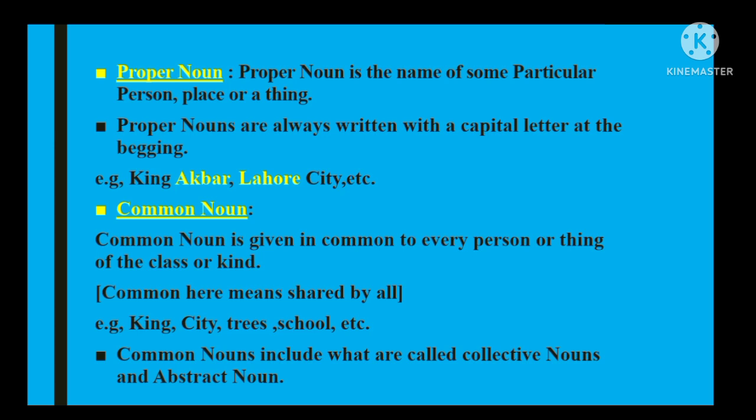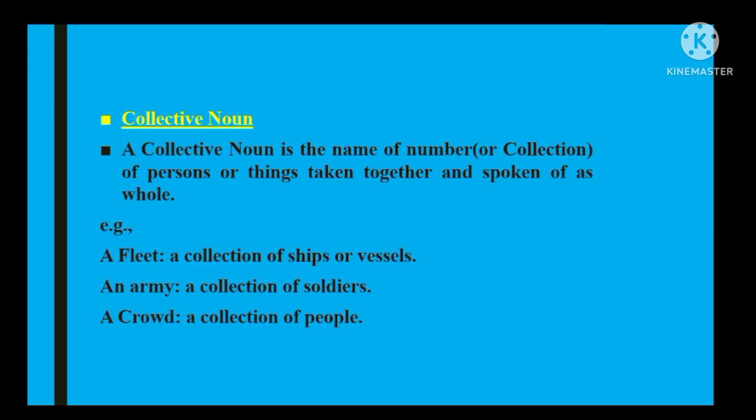Common noun ke andar collective noun aur abstract noun ko consider kar sakte hain — yeh dono common nouns hain. Collective noun kya hota hai? Collective noun woh hota hai jis mein ek majmoo'i taur par, ek ikhatta naam de diya jaata hai kisi bhi group of persons ke liye. Jaise students jo class mein maujood hote hain, unhe hum ek saath 'class' kehte hain.